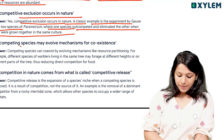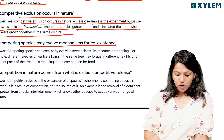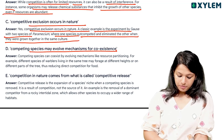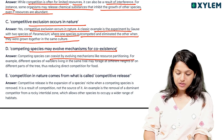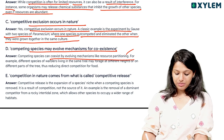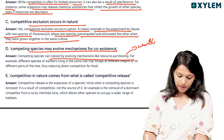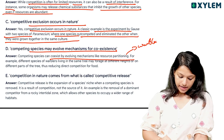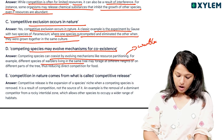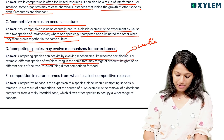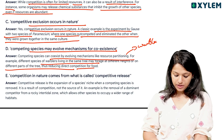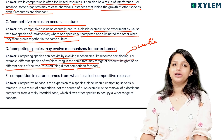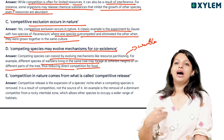Species can co-exist by evolving mechanisms such as resource partitioning. Using warblers as an example, different species of warblers living on the same tree may forage at different heights and different parts of the tree, thereby reducing direct competition.